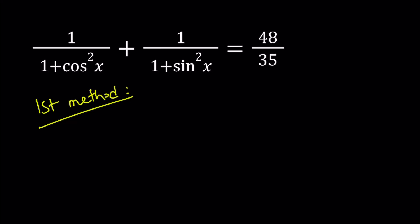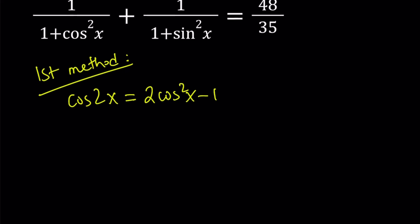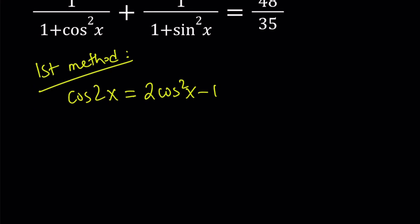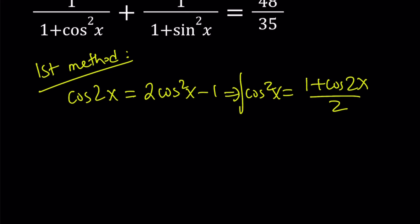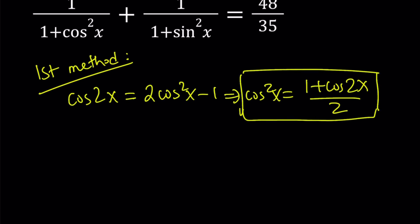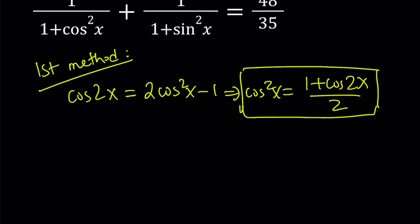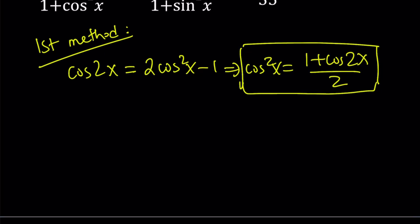For my first method, I'm going to be using the double angle formula for cosine. Remember, there are three formulas for cosine 2x and I'll be using two of them. One of them is cosine 2x equals 2 cosine squared x minus 1. From here, you can isolate cosine squared x and write it as 1 plus cosine 2x over 2. This formula is also used to evaluate integrals of even powers of sine and cosine — I've made videos on those if you're interested.